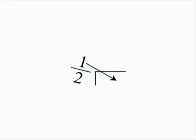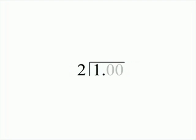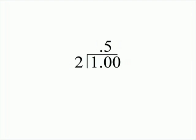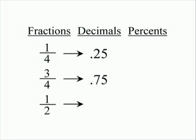Now for the fraction one-half: you're going to divide two into one. Write one as the decimal number, place two zeros behind the decimal point, and place the decimal point in your answer. Two divides into ten exactly five times with no remainder. We've changed the fraction one-half into the decimal five-tenths.